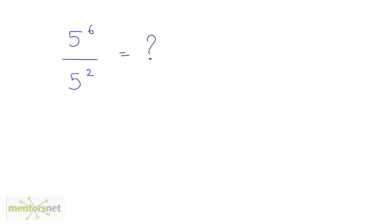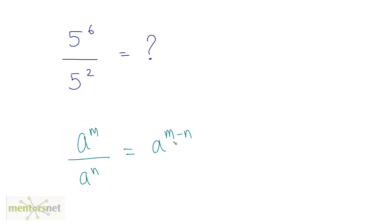The next law: if you have an expression where you have a raised to m divided by a raised to n, then it equals a raised to m minus n. So if you have division, you subtract the powers. For example, 5 raised to 6 divided by 5 raised to 2 gives 5 raised to 4.